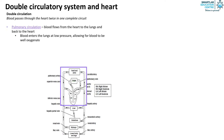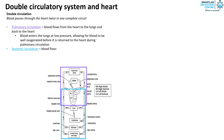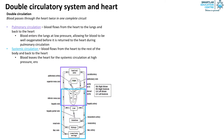In the systemic circulation, blood flows from the heart to the rest of the body and back to the heart. Blood leaves the heart for the systemic circulation at high pressure, ensuring that oxygenated blood is distributed to the body tissues faster.